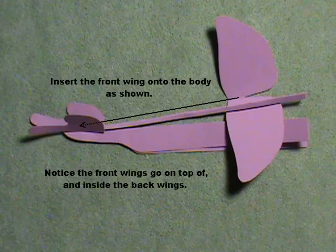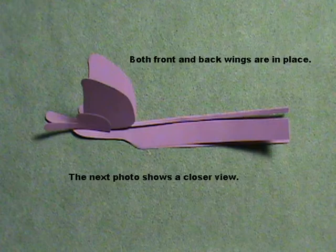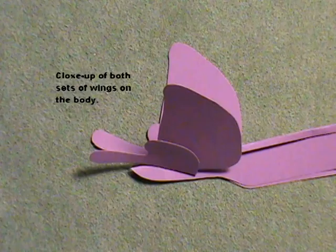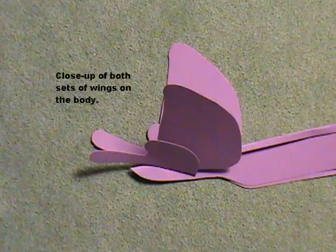Both front and back wings are in place. The next photo shows a closer view. Here's a closer view of both sets of wings on the body.